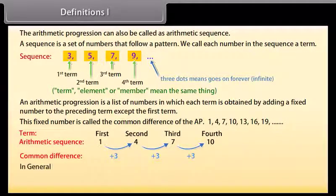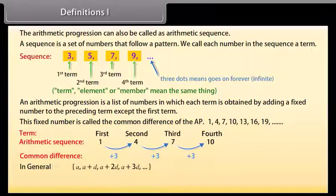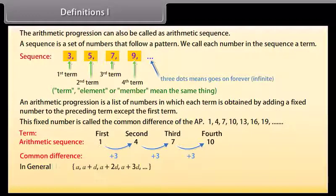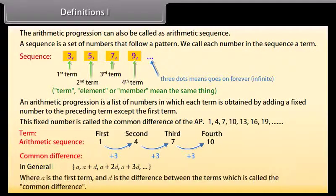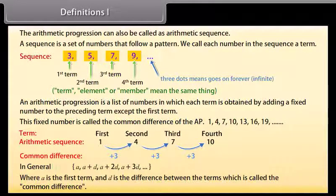In general, we can write an arithmetic sequence like this: a, a plus d, a plus 2d, a plus 3d, and so on — where a is the first term and d is the difference between the terms, which is called the common difference.